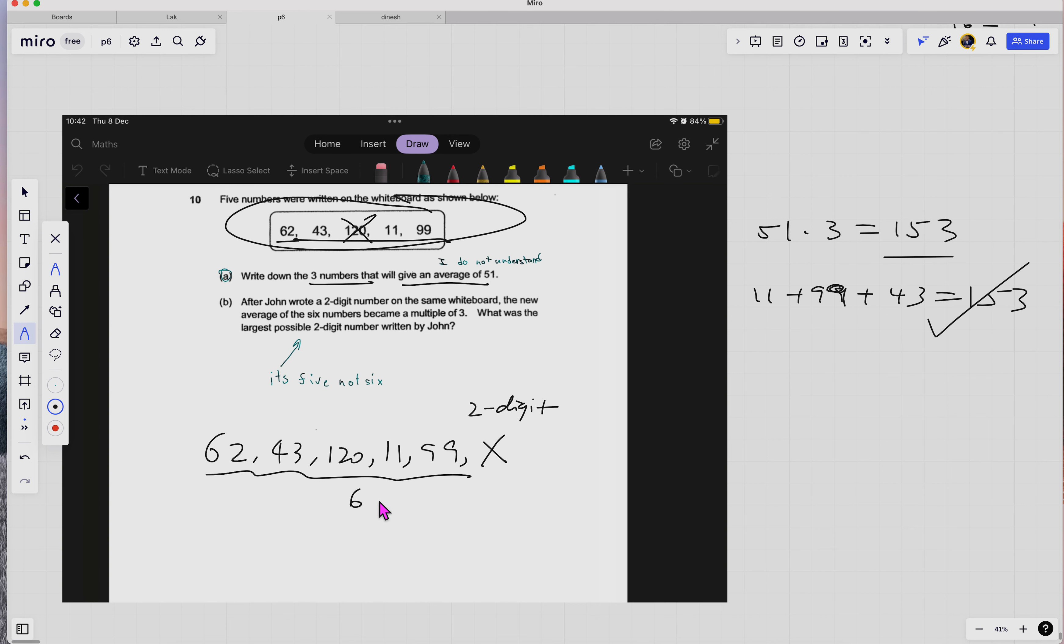335. Okay, so now you're going to add one two-digit number and it needs to be a multiple of three. So the largest two-digit number is 99, right? So you see if you can get a multiple of three.